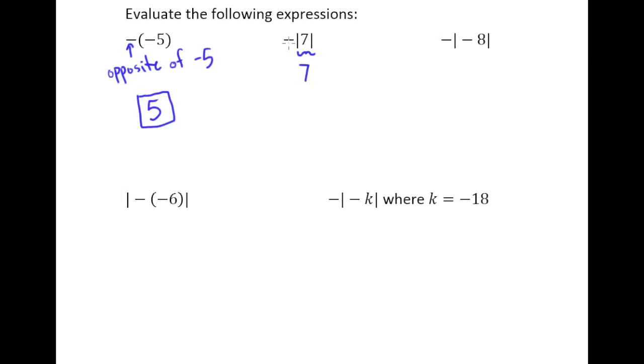But then what happens is this negative comes down because the absolute value isn't going to get rid of a negative that's outside of it. And so what we end up with is the opposite of the absolute value of 7 is the opposite of 7, which is of course negative 7.